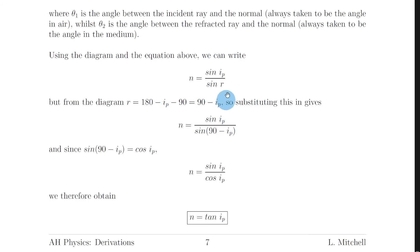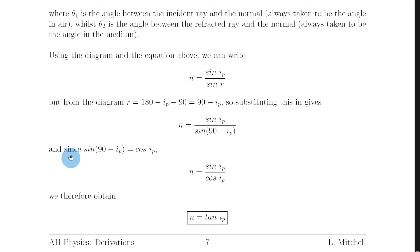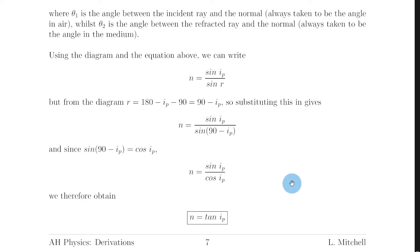So we can substitute in for r in this expression. We have n equals sine ip divided by sine of (90 minus ip). But remember from maths that sine of (90 minus x) equals cos x. So we can rewrite sine of (90 minus ip) as cos ip. That means we can rewrite this as n equals sine ip over cos ip. And from maths you should know that tan x equals sine x over cos x, so sine ip over cos ip equals tan ip. Therefore n equals tan ip.